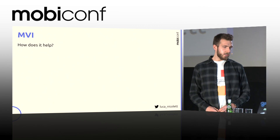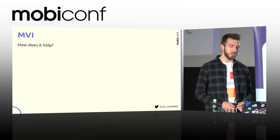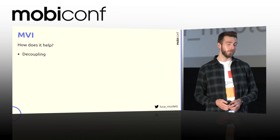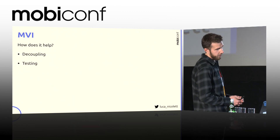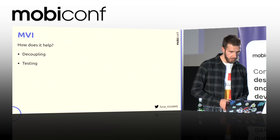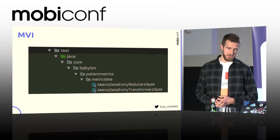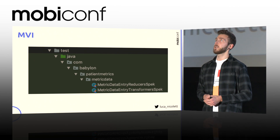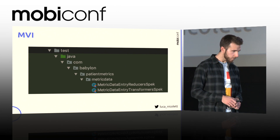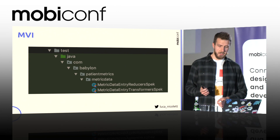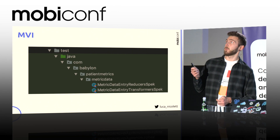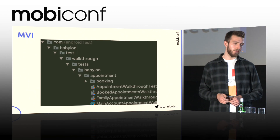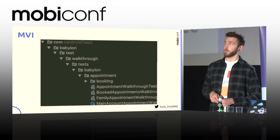So how does this MVI architecture help us? It helps us with decoupling, which comes with a lot of patterns, not only with MVI, but it also helps us with testing. How can it help us with testing? We are able to test almost every component of our architecture in isolation without relying on the Android framework. Those tests are not in the Android test folder, can be run in isolation, and are really, really fast. The only part that we are relying on Android for is the view component.